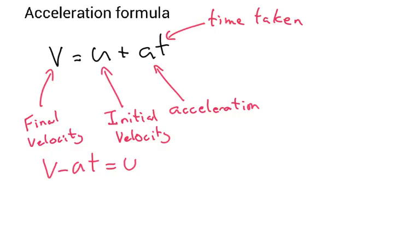If I want to make maybe acceleration the subject, I'll do V minus U over T equals A. Or if I want to make time the subject, I'd have V minus U over A equals T.